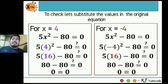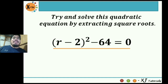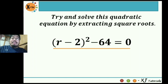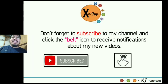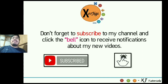At this point I have prepared an exercise for you to answer — just one problem. Try and solve this quadratic equation by extracting square roots: quantity r minus 2, squared, minus 64 is equal to 0. You can post your answers in the comment section. To wrap up this session, you can now solve quadratic equations by extracting square roots. This is Mr. Jiggs — don't forget to subscribe to my channel and click the bell to receive notifications about my new videos. Thank you, and see you in my next tutorial. Have a great day.